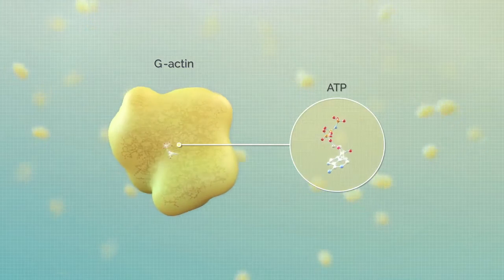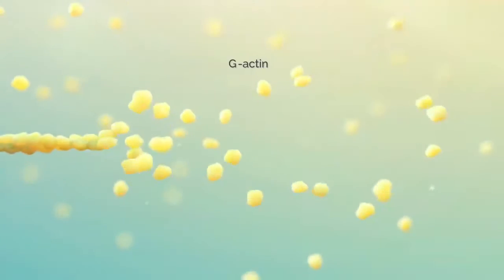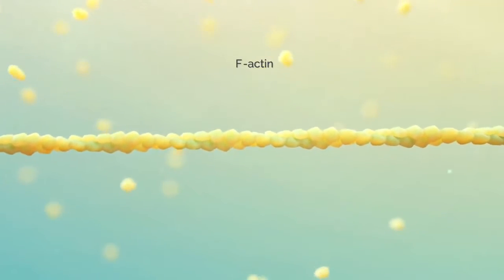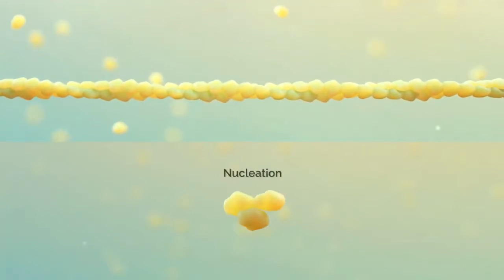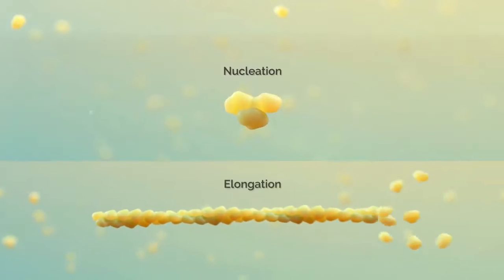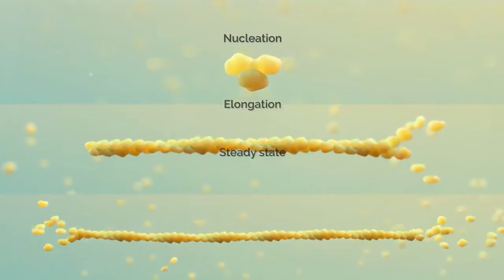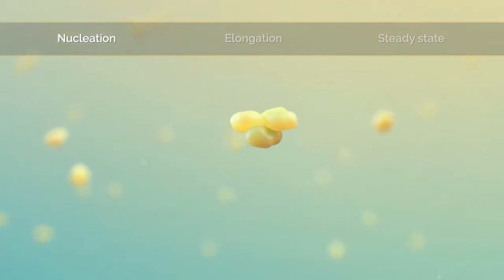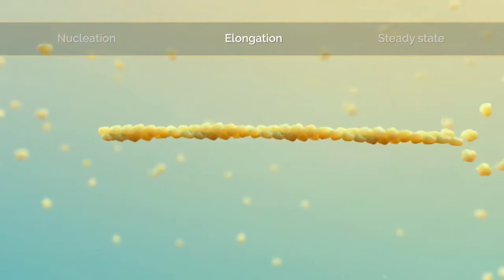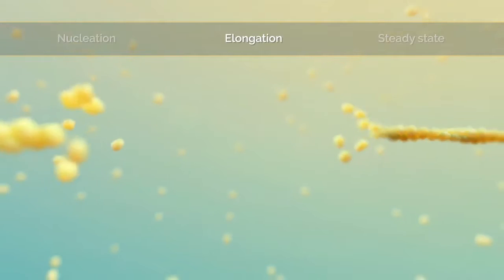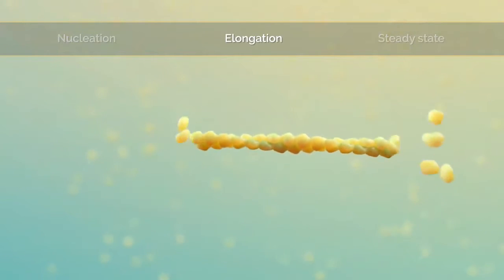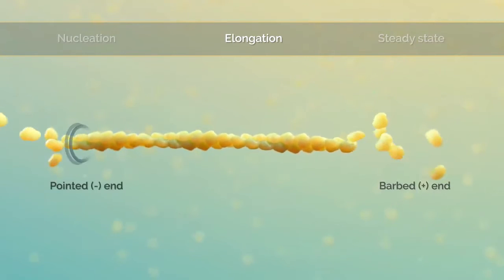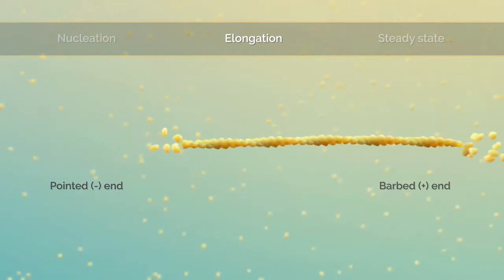As monomers, these ATP-bound G-actin monomers assemble or polymerize into filaments known as F-actin over three phases: nucleation, elongation, and steady state. Nucleation occurs as three ATP-bound G-actin monomers form trimers. Then rapid linear polymerization occurs in a process called elongation. G-actin can bind reversibly to either end of the growing filament, known as the barbed or plus end and the pointed or minus end, but monomers preferentially bind to the barbed end.